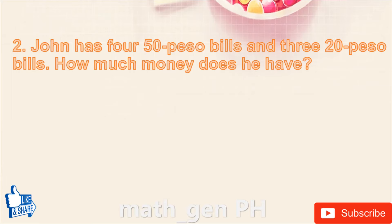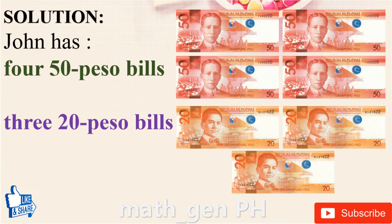Question number 2: John has 4 fifty-peso bills and 3 twenty-peso bills. How much money does he have?